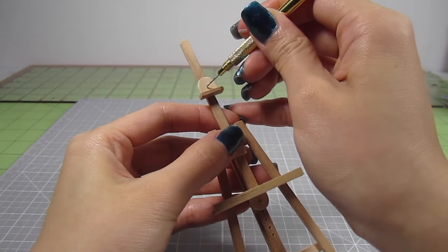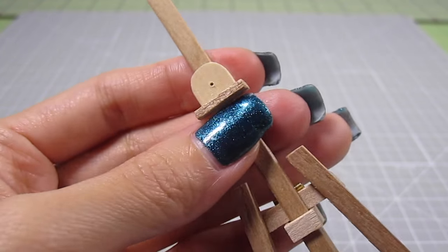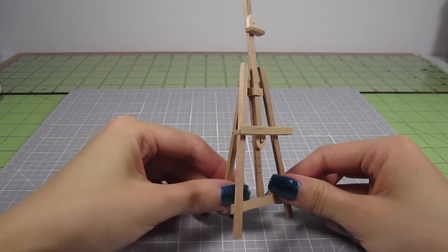Last thing, I just drilled a hole through that top piece for an added detail. It doesn't actually have any function so it's totally optional. And that's it guys, the miniature easel is all done.